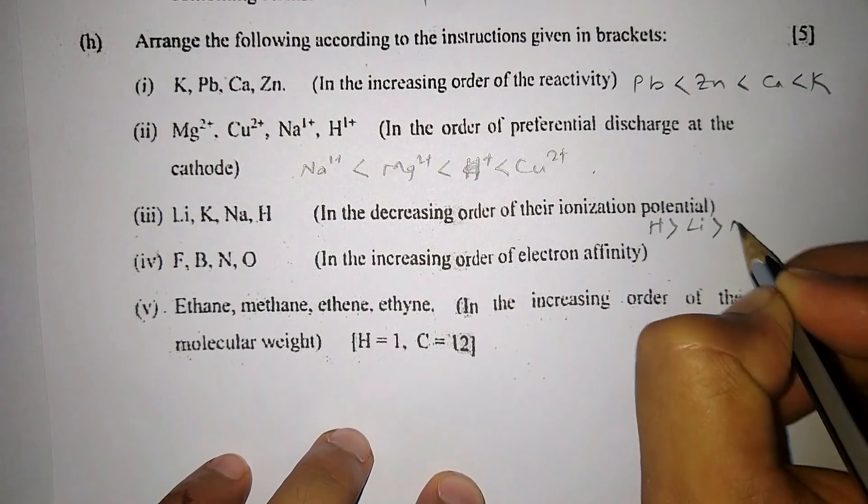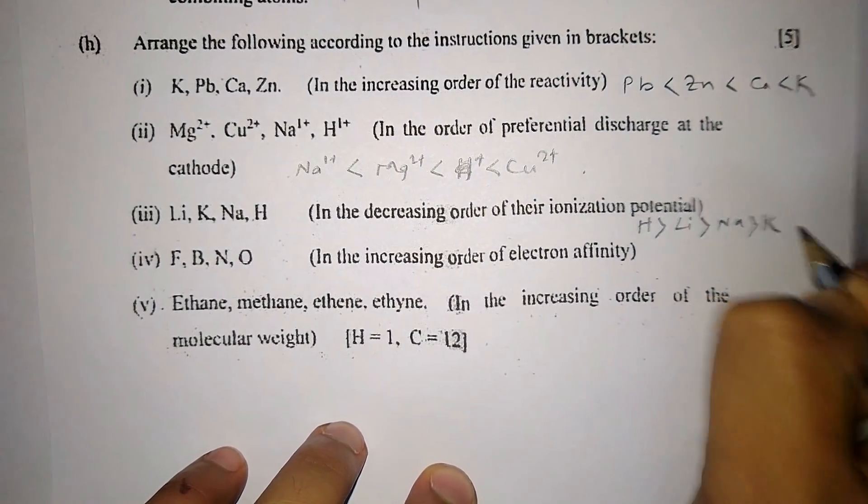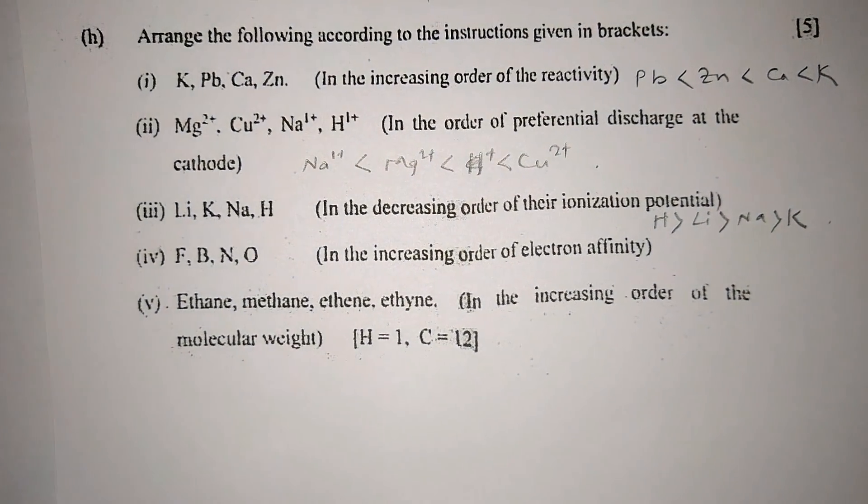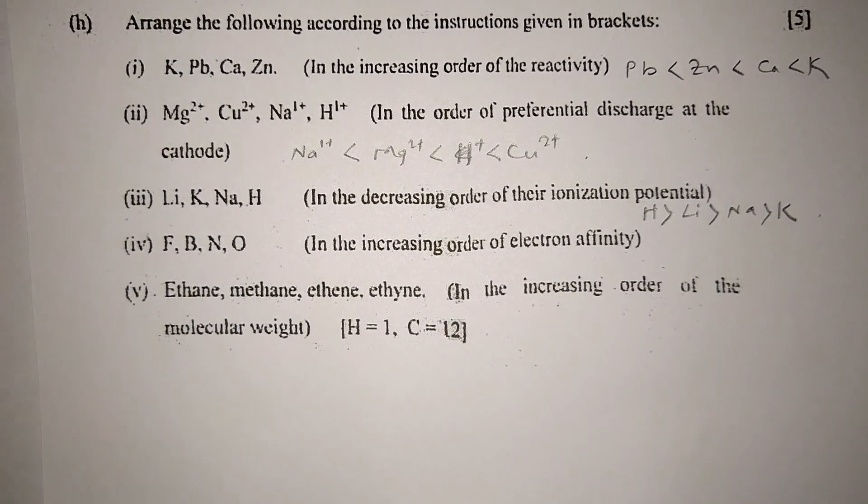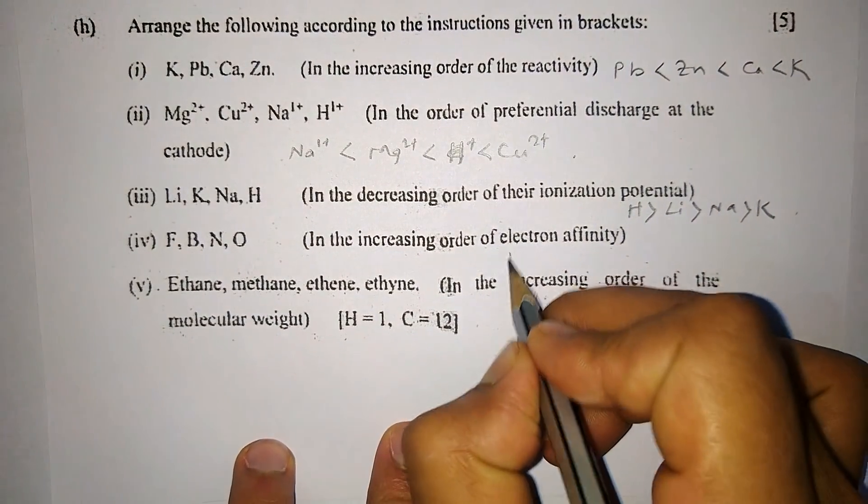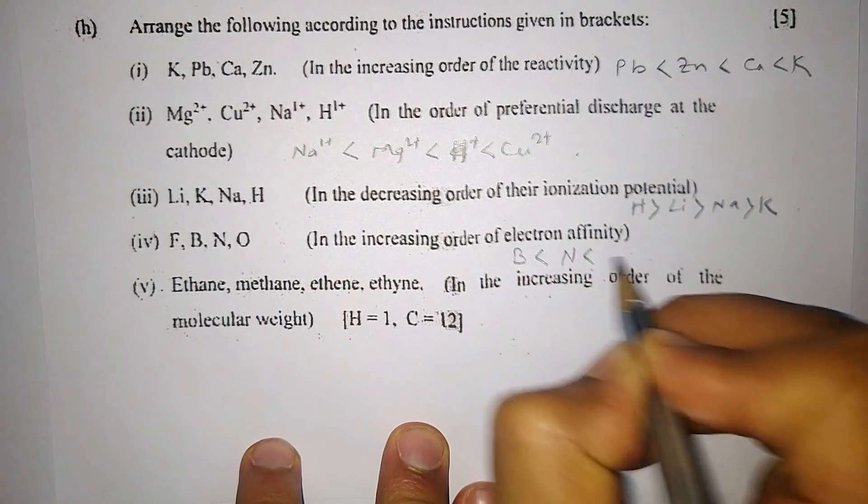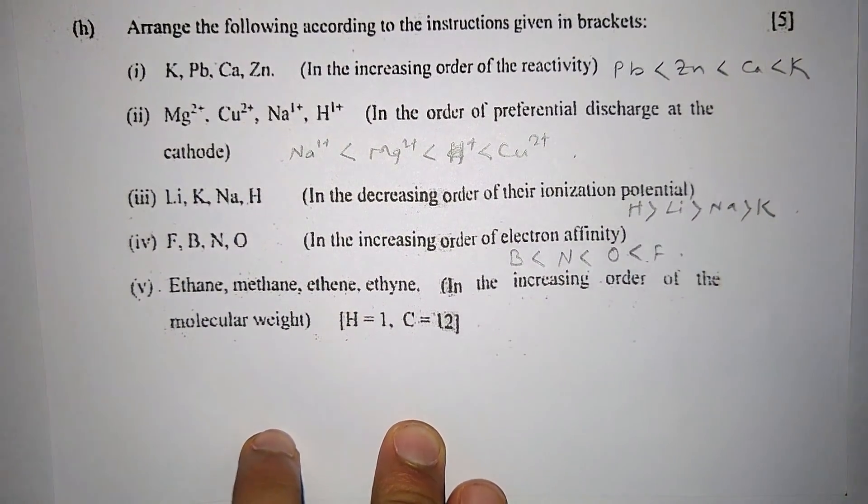Number three: Lithium, potassium, sodium, and hydrogen in the decreasing order of their ionization potential. Now ionization potential decreases while moving down the group, so the order will be this.